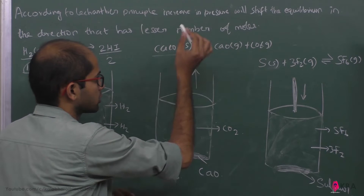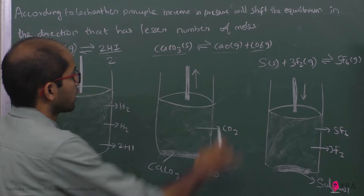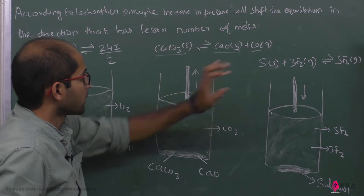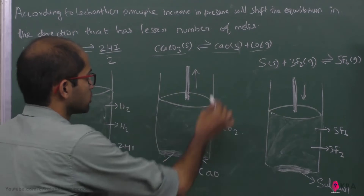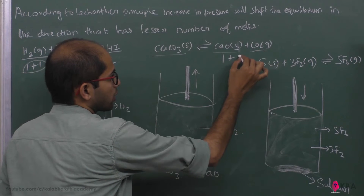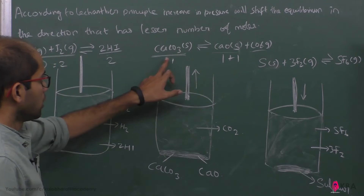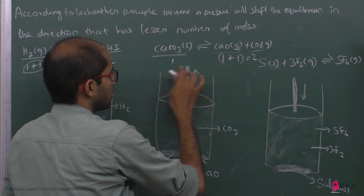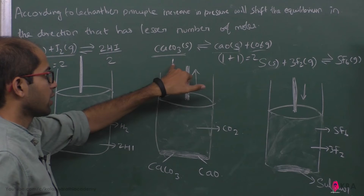In the second case, calcium carbonate is in the solid state, calcium oxide is in the solid state, and carbon dioxide is in the gaseous state. On the product side there are 2 moles (1 mole CaO + 1 mole CO₂), while on the reactant side there is 1 mole (CaCO₃). So the lesser number of moles is on the reactant side.